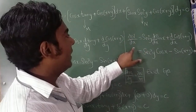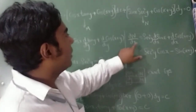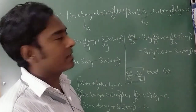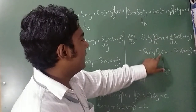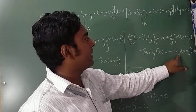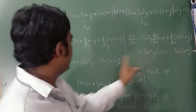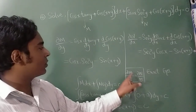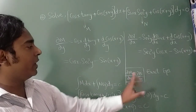Differentiating N with respect to x: sec²y remains as is, d/dx of sin x = cos x, and d/dx of cos(x+y) = -sin(x+y). So ∂N/∂x = cos x·sec²y - sin(x+y). You can see both ∂M/∂y and ∂N/∂x are exactly the same, confirming ∂M/∂y = ∂N/∂x. This is an exact equation.